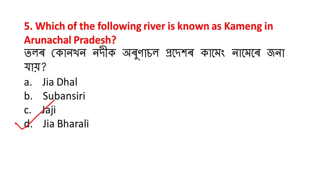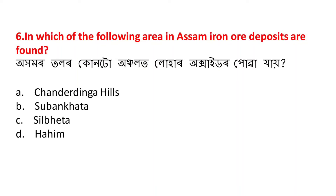This question is very important. In which of the following areas in Assam are iron ore deposits found? Ohamor toolor koonkhan to Anshalat luhar khani pwa jaya. The answer is A - iron ore is found in the Dering hills area.